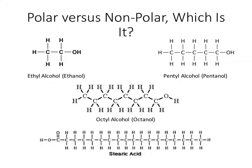We now know how to classify materials as ionic, polar covalent, or nonpolar covalent. But what happens if a molecule has a lot of nonpolar parts and a little bit of a polar part? Technically, if there is asymmetry around an atom or molecule, it's polar. But there are different degrees of polarity, which we're going to discuss now.